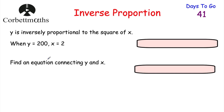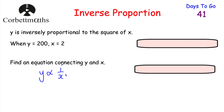In part A we need to find an equation connecting Y and X. We're told Y is inversely proportional to X squared, so we write the proportional symbol, and because it's inverse we write 1 over X squared. Whenever it's inversely proportional, you write 1 over whatever it's inversely proportional to.